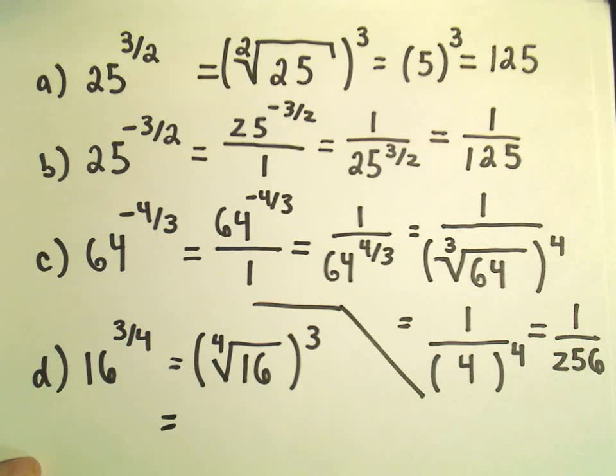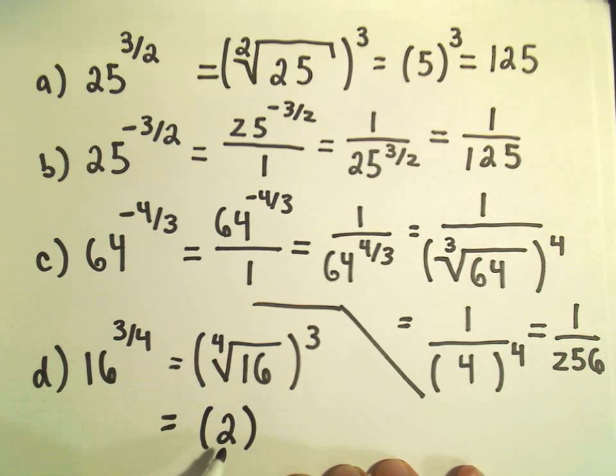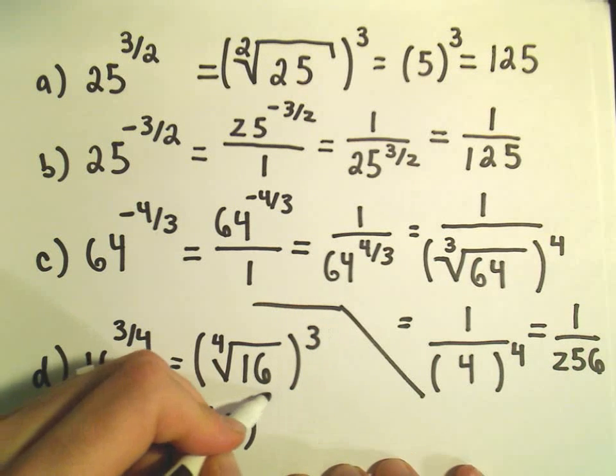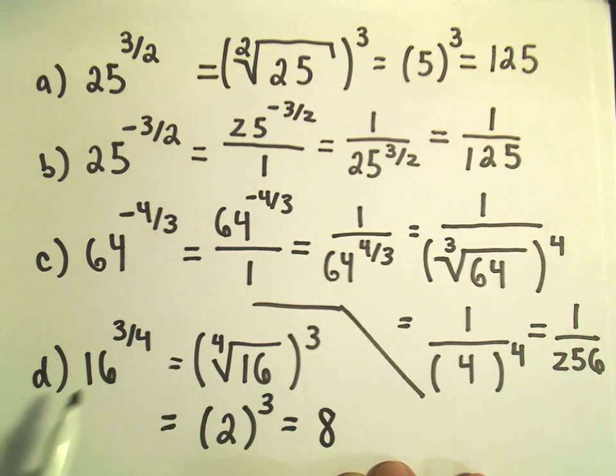So I think what number, what positive number times itself four times gives us 16? Well, I believe if you multiply two by itself four times, we'll get 16. So the fourth root of 16 does give us two. And then we have to take two to the third, which will give us the value eight. So 16 to the three-fourths is just a fancy way to write the number eight.